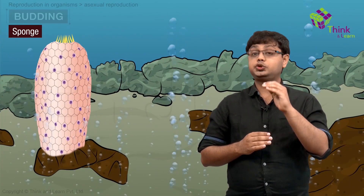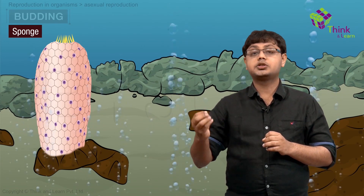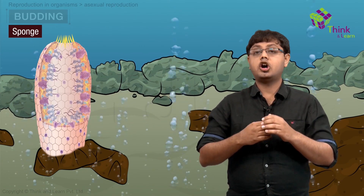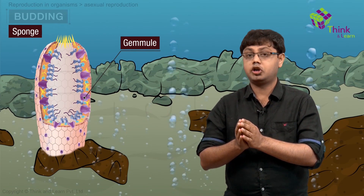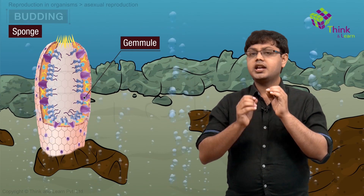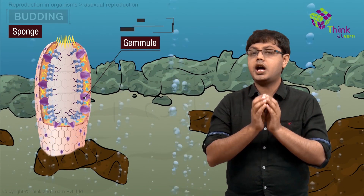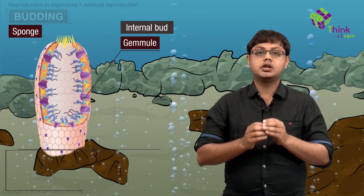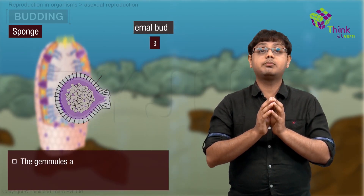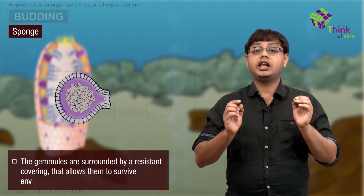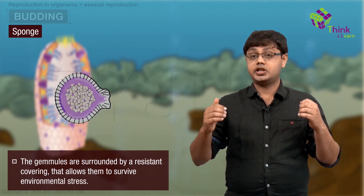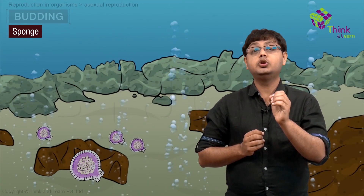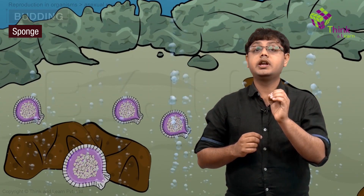All freshwater and some marine sponges survive cold or drought by forming gemmules within the body of the adult sponge. These structures can be considered as internal buds. The gemmules are surrounded by a resistant covering that allows them to survive environmental stress. When the sponge dies, it disintegrates and the gemmules are released with their covering intact.